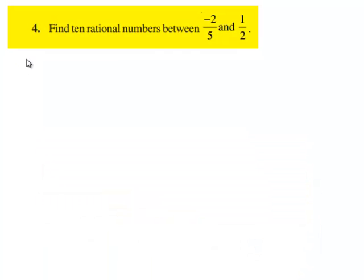Now, let us move on to the solution. So, the given two rational numbers are minus 2 by 5 and 1 by 2.